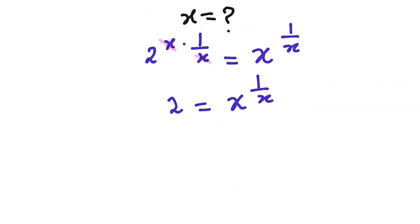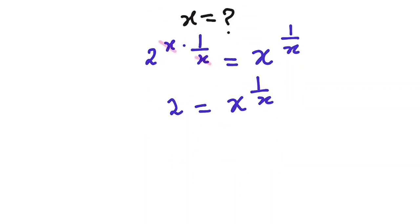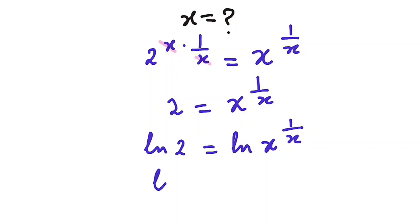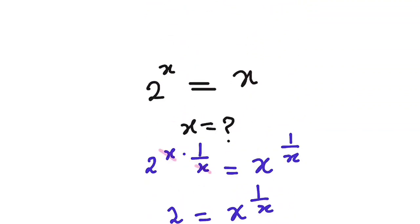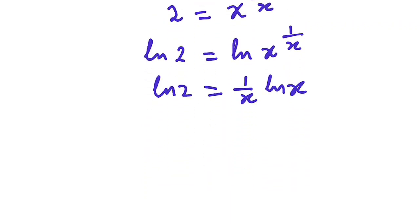The next thing I'm going to do is take the log of both sides — that is ln of 2 equals ln of x to the power of 1 over x. From here, we're going to have ln of 2 equals 1 over x times ln of x. Let me rearrange this equation: 1 over x times ln of x equals ln of 2, which doesn't change anything.